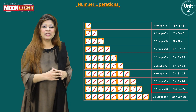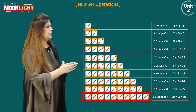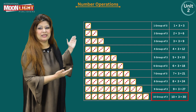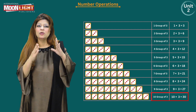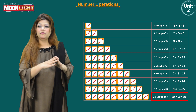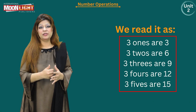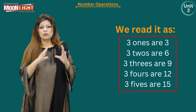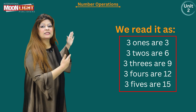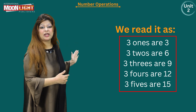Ten groups of three: three is repeating ten times, and ten multiplied by three is equals to 30, which is easy — just a multiple of ten. Now I'm going to tell you how to read this table: three ones are three, three twos are six, three threes are nine, three fours are twelve, three fives are fifteen. Keep reading in the same way.